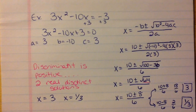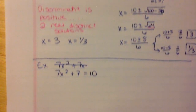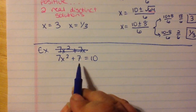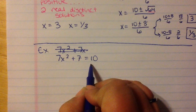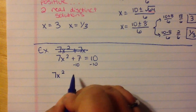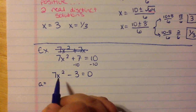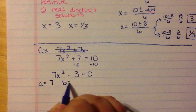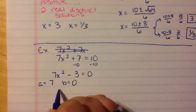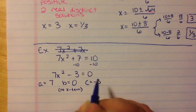Let's try another one: 7x squared plus 7 equals 10. I wanted to try one that didn't have an x term. So we have 7x squared, and 7 minus 10 is negative 3. Now that it's set equal to zero, I look for a, b, and c. A is in front of the x squared term, so it's 7. B is in front of the x term, but there is no x term, so b is 0. And c is negative 3, because it doesn't have an x.